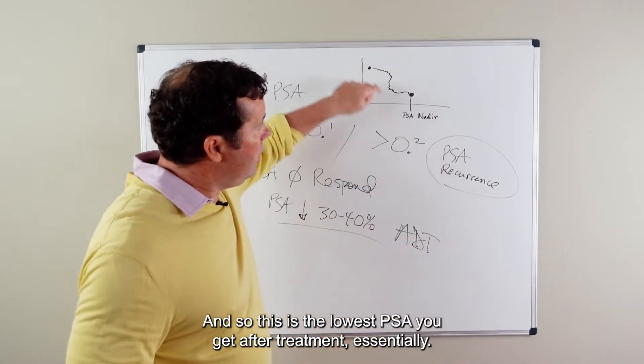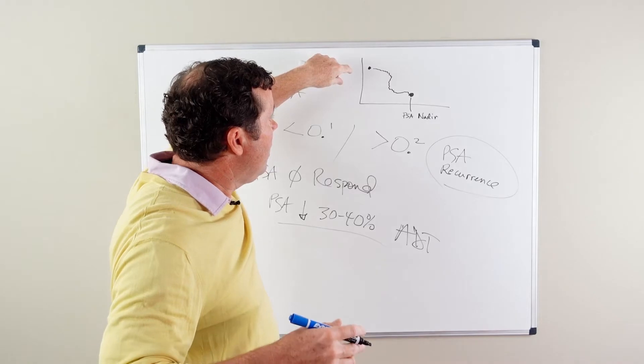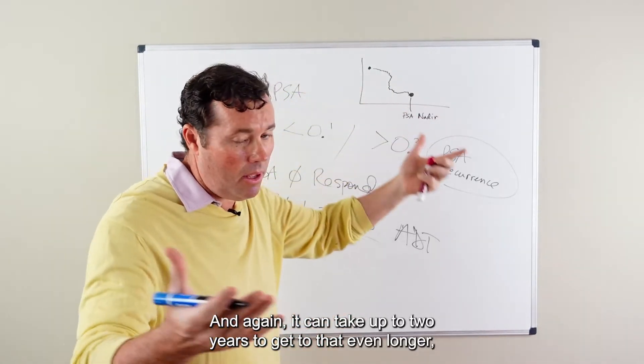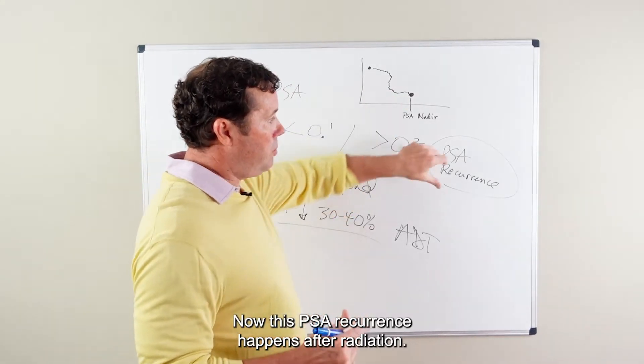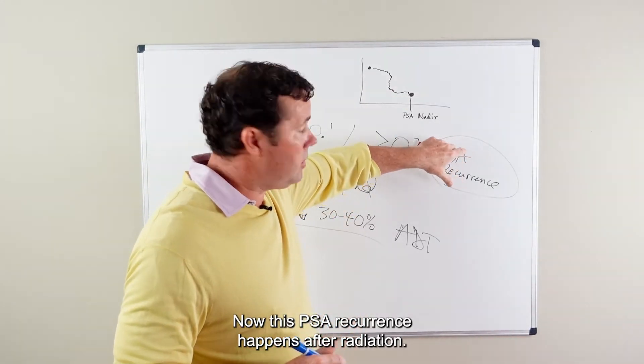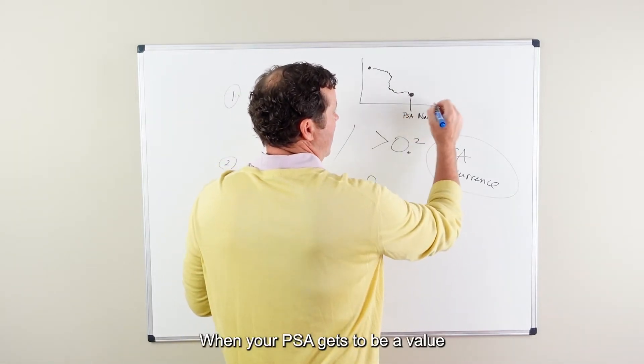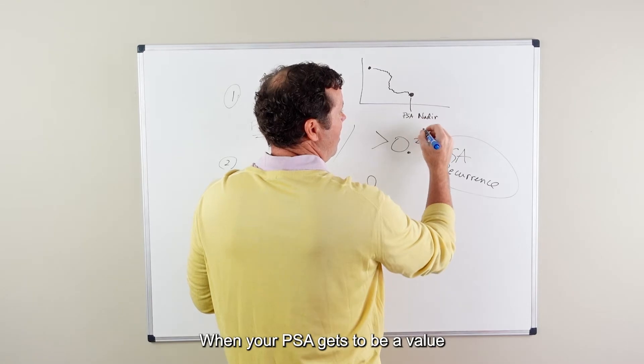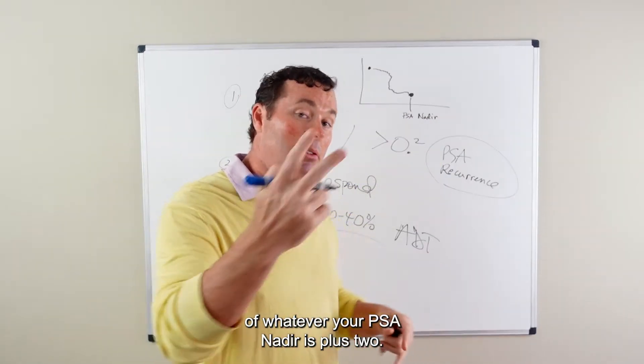And so this is the lowest PSA you get after treatment essentially. And again, it can take up to two years to get to that, even longer. But this is the PSA nadir. Now this PSA recurrence happens after radiation when your PSA gets to be a value of whatever your PSA nadir is plus two.